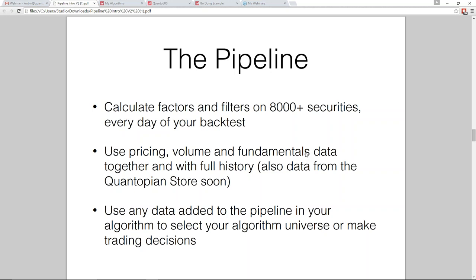One terminology point: the 'universe' refers to the 8,000-plus securities available on any given day in the U.S. market, versus your 'algorithm universe,' which is the roughly 500 securities you identify that you want minutely data on. Even using the pipeline, you calculate factors across 8,000 securities using daily data, but you still identify the 500 securities you want minutely data on for more refined decision-making. I apologize in advance if I mix up these two terms.